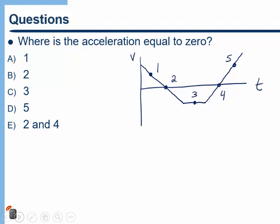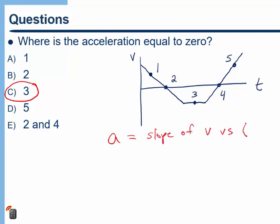Try this question: where is the acceleration equal to zero? Notice that we're plotting velocity versus time. The answer is C. Remember that the acceleration is the slope of V versus T, so we're looking for where the slope of this graph is zero. That's at point three. Notice that where the acceleration is zero has nothing to do with where the velocity is zero — the velocity is zero at both point two and point four. But when figuring out acceleration from a velocity versus time graph, what we're looking for is where the graph is flat: where the slope equals zero.